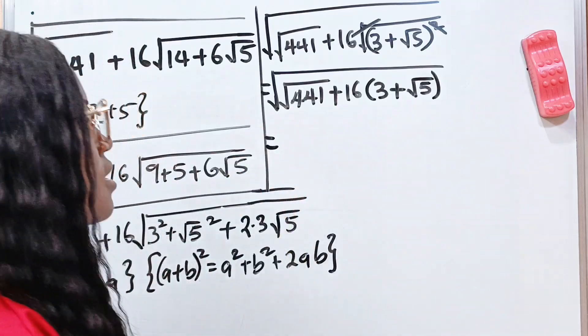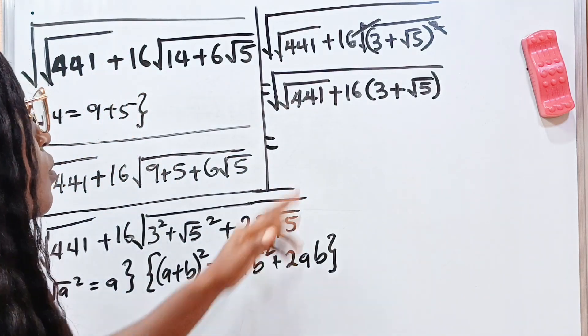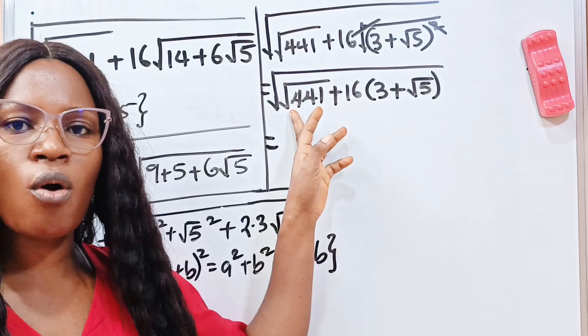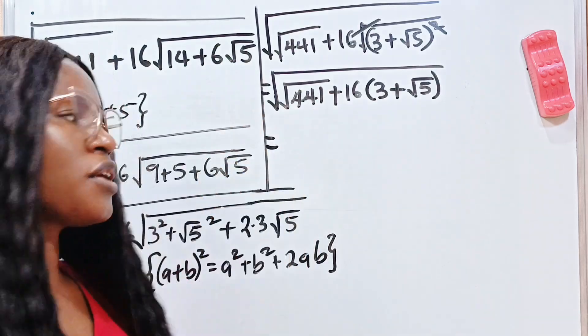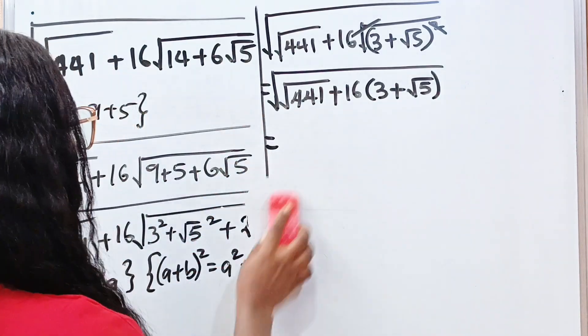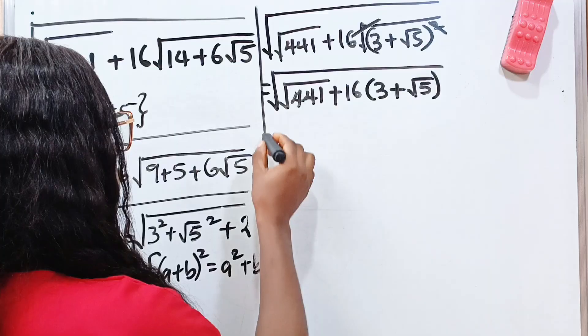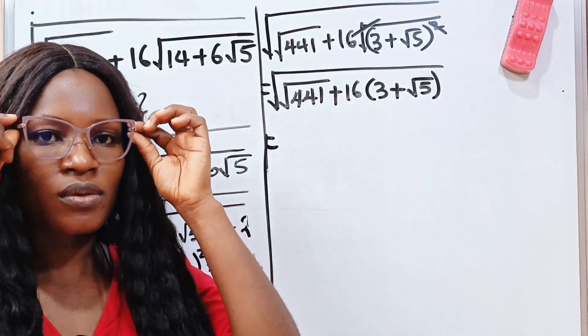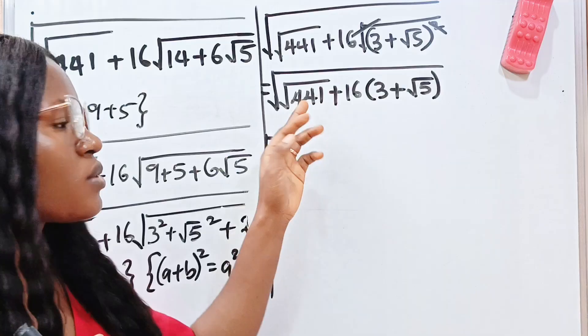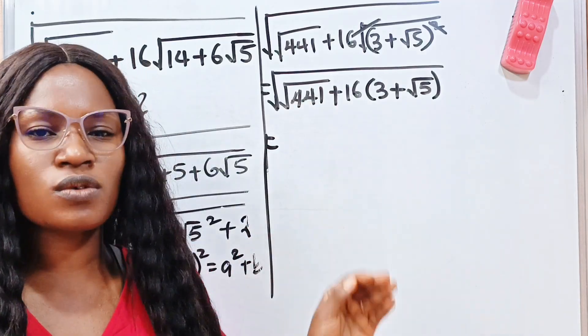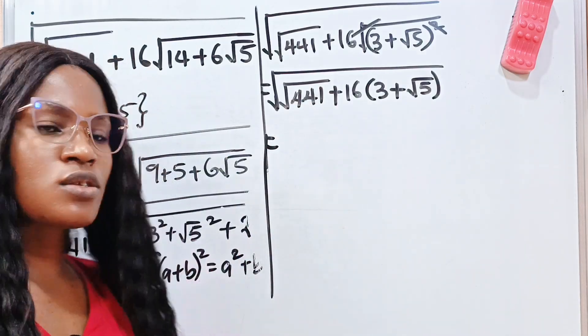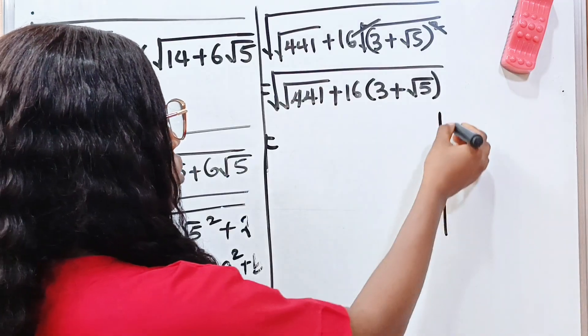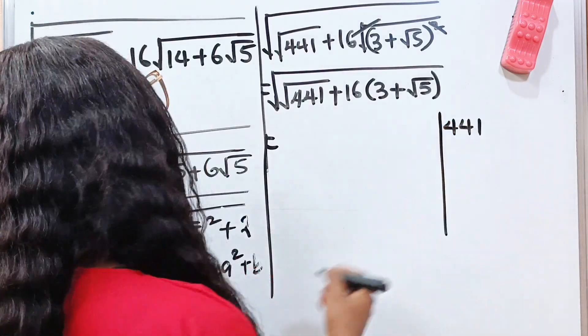Now this is equal to... Let us simplify root 441. So I'm going to give you a way that you can use to simplify any root, no matter how big that root looks. So even though this looks like a large number, some of us don't know that this is 21 squared. Now how do you get to know?